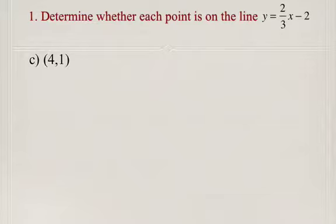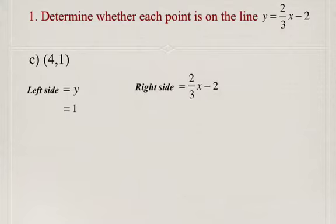Let's take a look at one more example. We want to know if the point (4,1) lies on the line y equals 2/3x minus 2. Just as before, on the left-hand side we have y, which from our coordinate equals 1. On the right-hand side we have 2/3x minus 2, and our x-coordinate is 4, so we're going to substitute that in for x.